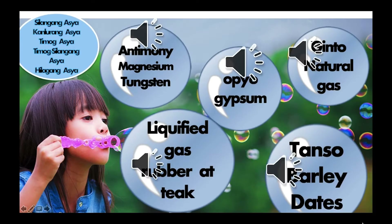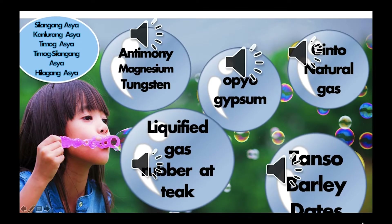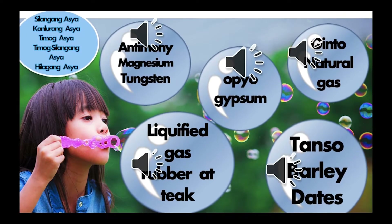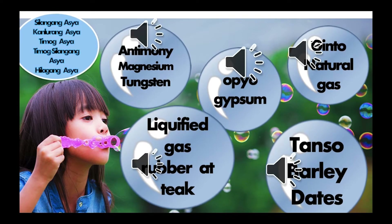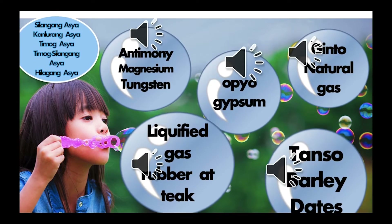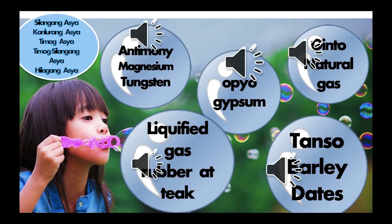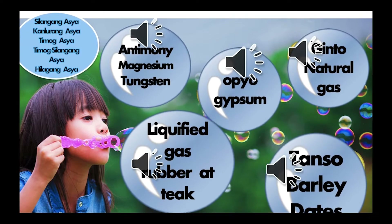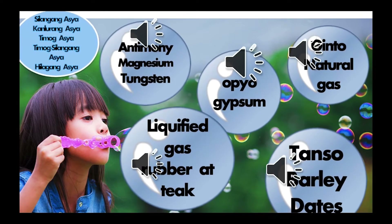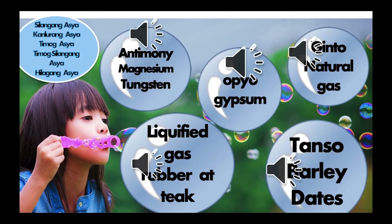Para sa panuto, pumili ng isang lobo at tukuyin kung anong region sa Asia matatagpuan ang bawat likas na yaman na ito. Kung ang nabili mong lobo ay tungsten, magnesium, at ang sagot mo ay silangang Asia — tama ka!